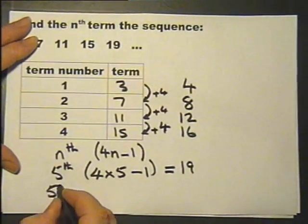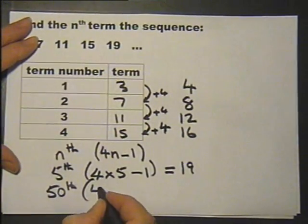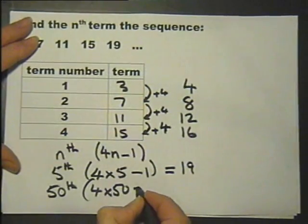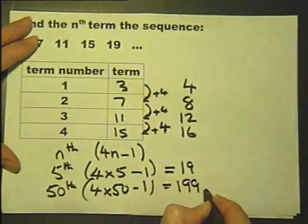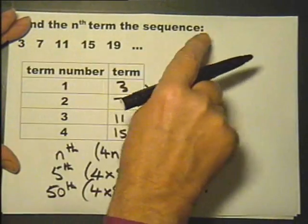Let's work out the 50th term. That would be 4 times 50 subtract 1. 4 times 50 is 200, subtract 1, 199. I can work out any term in that sequence.